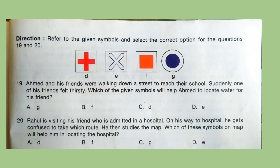Refer to the given symbols and select the correct option for questions 19 and 20. Question 19: Ahmad and his friends were walking down a street to reach their school. Suddenly one of his friends felt thirsty. Which of the following symbols will help Ahmad locate water for his friend? Correct answer is option A, that is G. Question 20: Rahul is visiting his friend admitted in a hospital. On his way he gets confused about which route to take and studies the map. Which symbol on the map will help him locate the hospital? Correct answer is option A — symbol D.